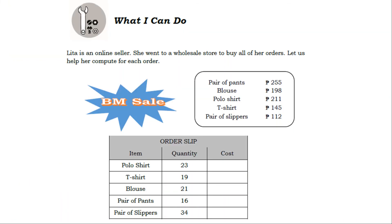What I can do: Lita is an online seller. She went to a wholesale store to buy all of her orders. Let us help her compute for each order. Items available: pair of pants at 255 pesos, blouse at 198 pesos, polo shirt at 211 pesos, T-shirt at 145 pesos, pair of pants at 155 pesos, and pair of slippers at 112 pesos.